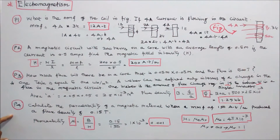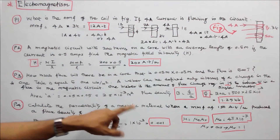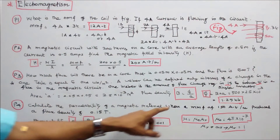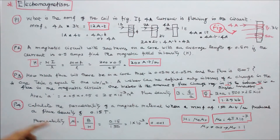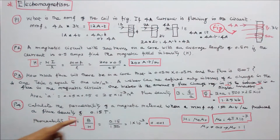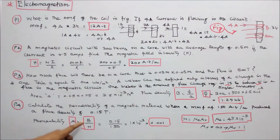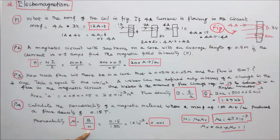Problem number 4. Calculate the permeability of a magnetic material when an MMF of 150 ampere turns per meter produces a flux density of 0.15 tesla. Permeability mu equals B divided by H. Here B equals 0.15, H equals 150 ampere turns per meter. 0.15 divided by 150 equals 1 into 10 power minus 3, or 0.001.